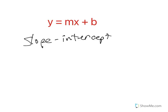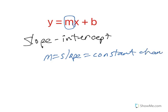When we have an equation in slope-intercept form, it's important to remember that m is the slope and slope is the constant change over time. Something that happens again and again and is consistent.